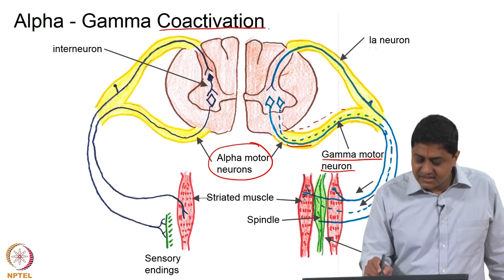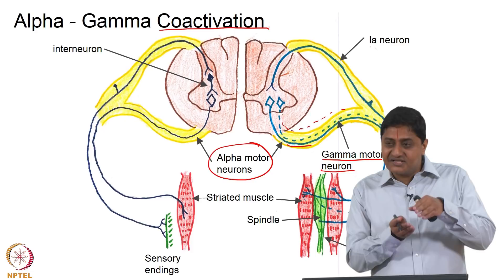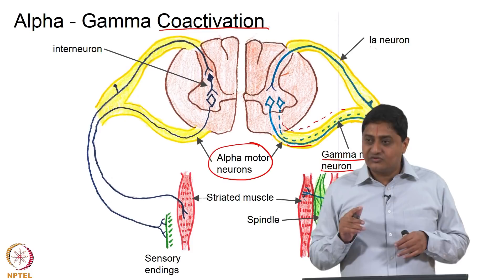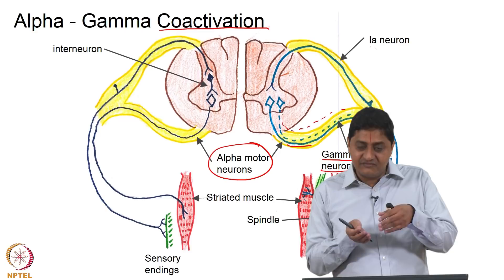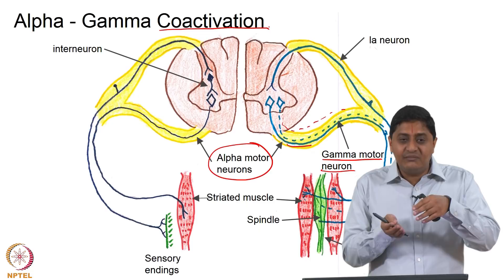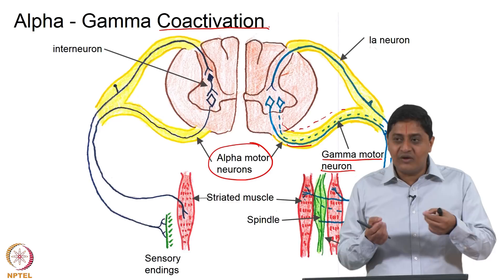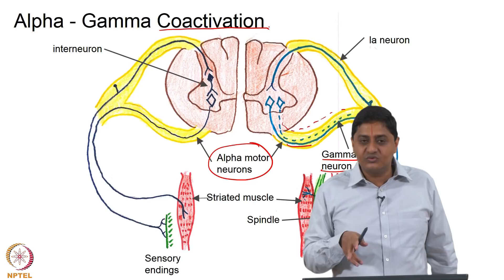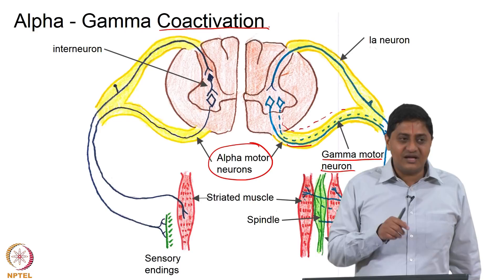Whenever the alpha motor neuron of a muscle is activated, what will it do? It will contract the extrafusal fibers by excitation-contraction coupling. At the same time, to not lose information about the length of the muscle, the intrafusal fibers are stretched by sending information to the contractile polar regions via gamma motor neurons. This simultaneous activation is why the process is called alpha-gamma coactivation.